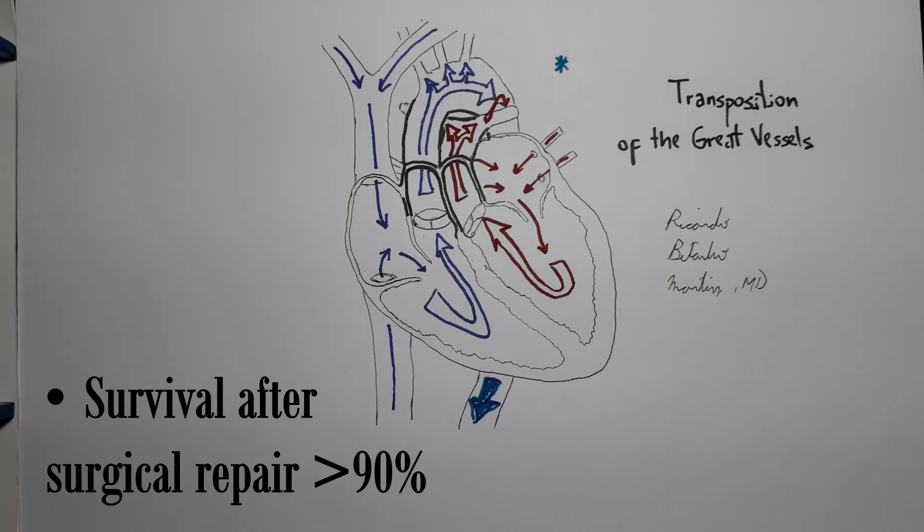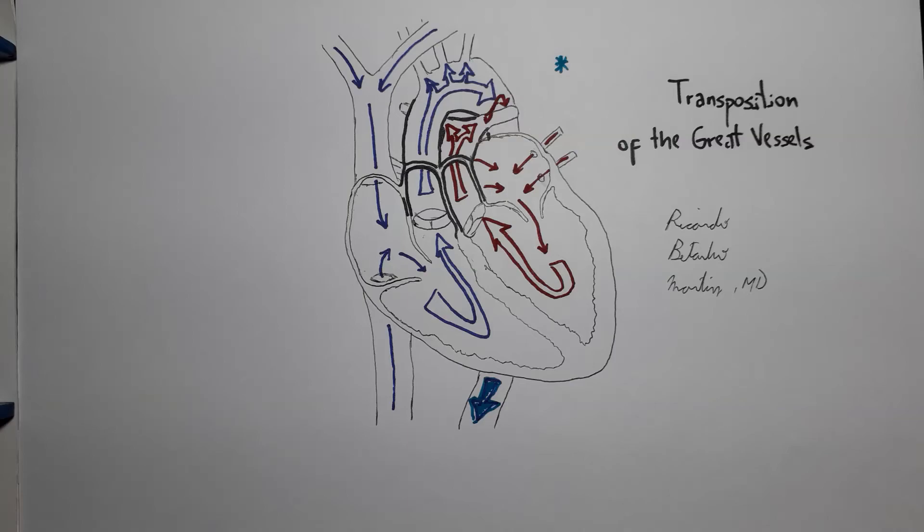Finally, now that you know what transposition of the great arteries is, let's address the elephant in the room. What's the D, the dextro, in D-transposition of the great arteries?